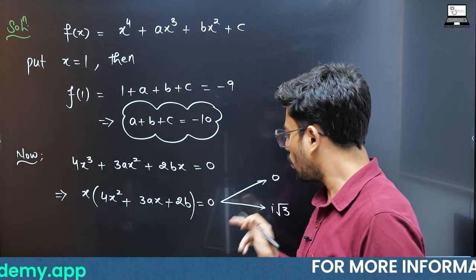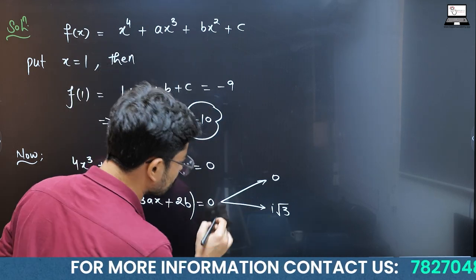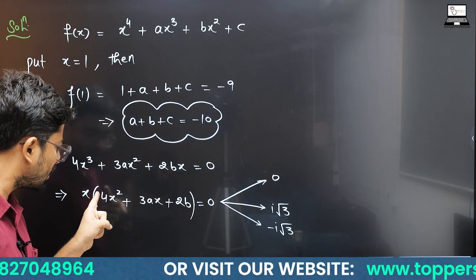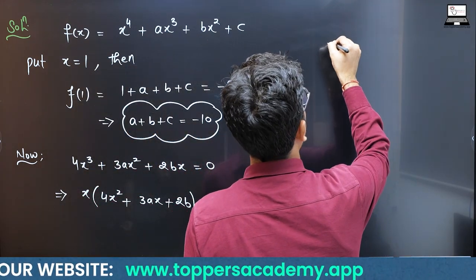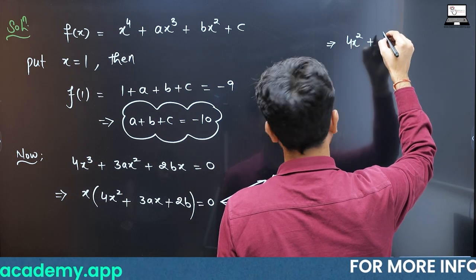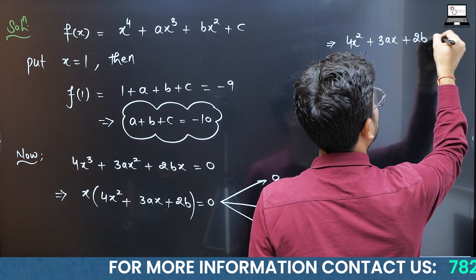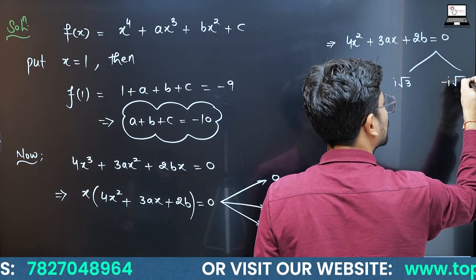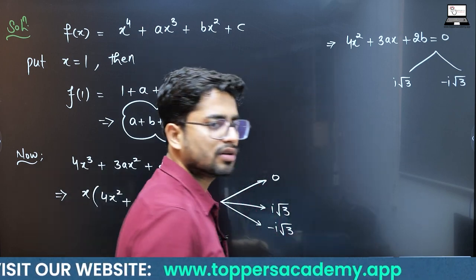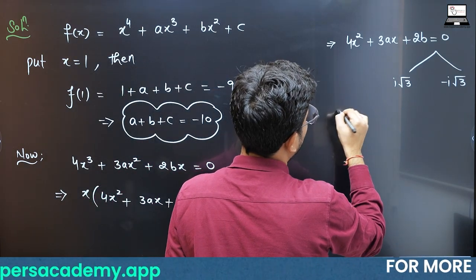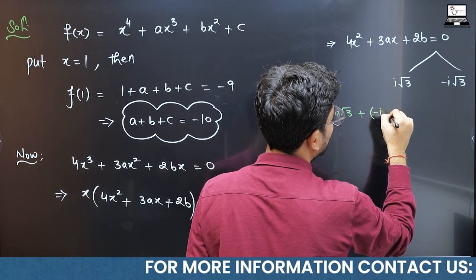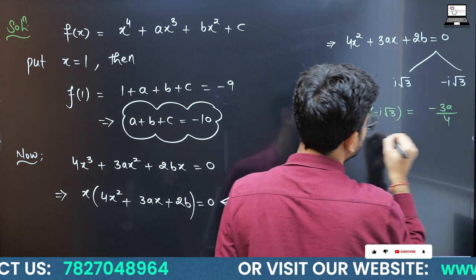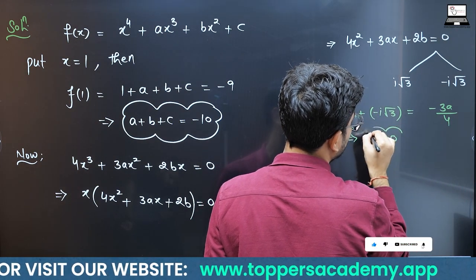Since this is a degree-3 polynomial with real coefficients, complex roots always occur in conjugate pairs. So if one root is iota root 3, the second must be minus iota root 3. Using the relation between roots and coefficients, the sum of roots — iota root 3 plus (minus iota root 3) — equals minus 3a/4. Since the sum is 0, a = 0.